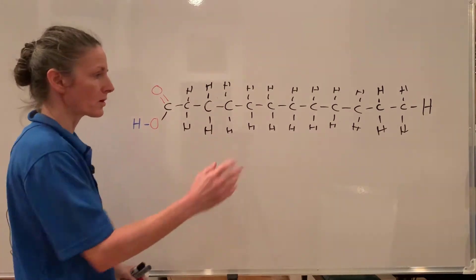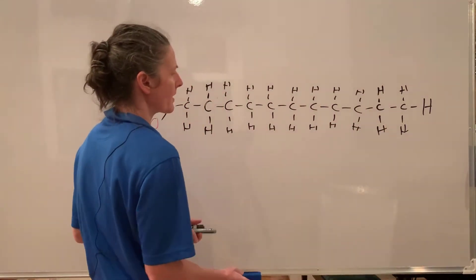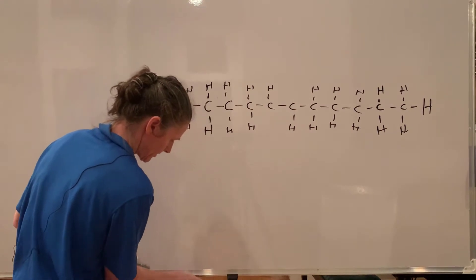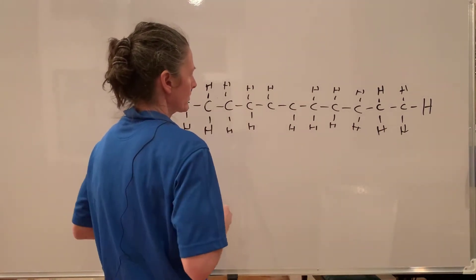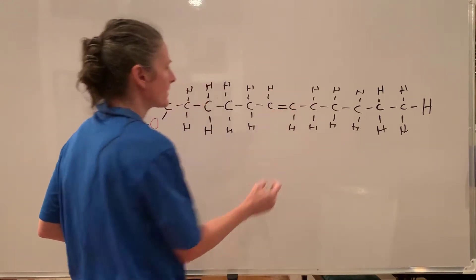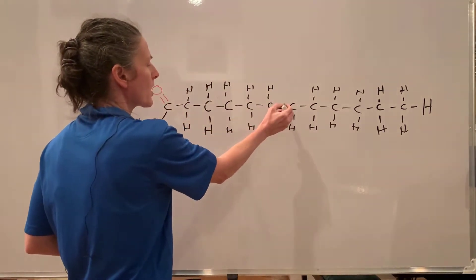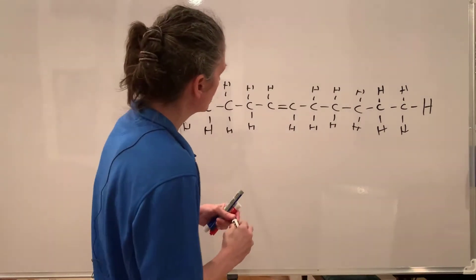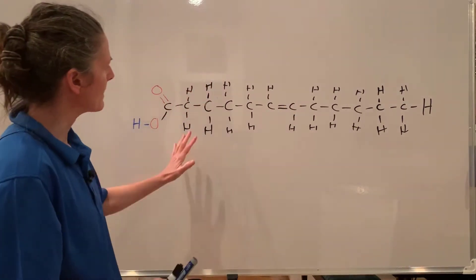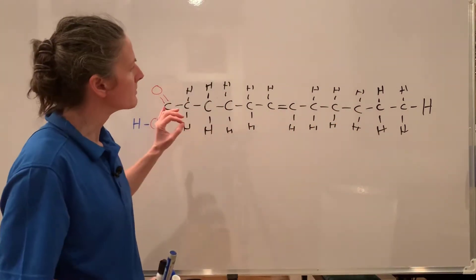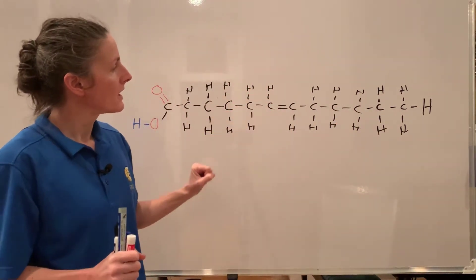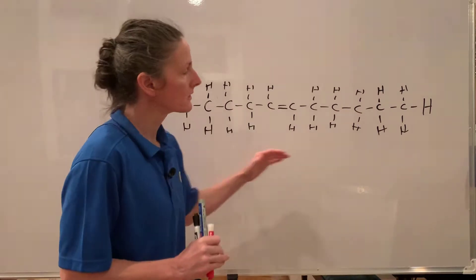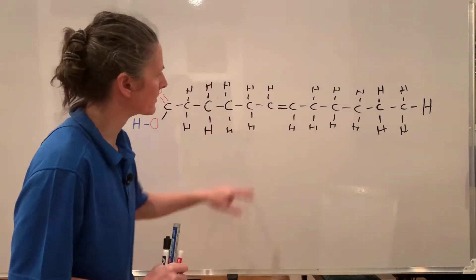Carbon makes four covalent bonds, and it could make a double covalent bond with itself. If we introduce a double covalent bond between two carbons, that leaves only one extra bond for hydrogen. This makes the molecule unsaturated because we've introduced a double covalent bond. If we had more than one double covalent bond, we would call it polyunsaturated; with just one double bond, it's monounsaturated.